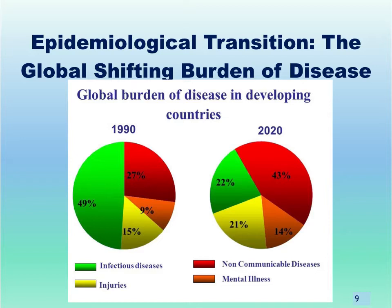Looking at the epidemiological shift occurring globally: as recently as 1990, the global burden of disease was about equally split between infectious or communicable diseases and NCDs — including injuries and mental illness. By the projection for 2020, NCDs alone will account for 43% of the global burden, and when coupled with mental illness at 14% and injuries at 21%, this will account for 78% of the global burden of disease compared to just 22% for communicable diseases. This is the epidemiological transition — the move away from infectious diseases towards NCDs as the primary burden of disease and disability globally and locally in the Pacific.